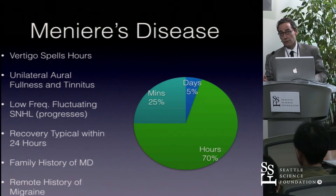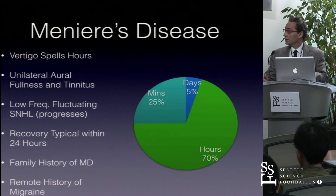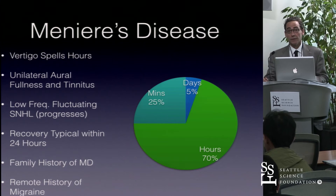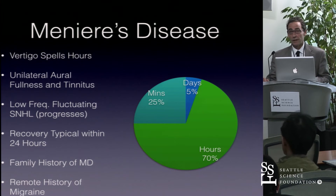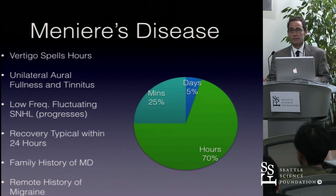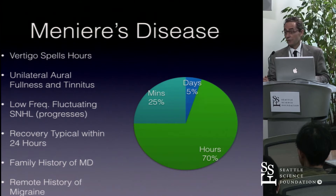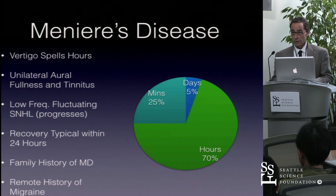With Meniere's disease, vertigo typically isn't hours — about 25% of patients have spells of minutes and the fewest have days. Patients complain of aural fullness, tinnitus, and low-frequency fluctuating sensorineural hearing loss that progresses over time. There is usually recovery of symptoms within 24 hours. There is often a family history of Meniere's disease, and some patients may also have a history of migraine headache.